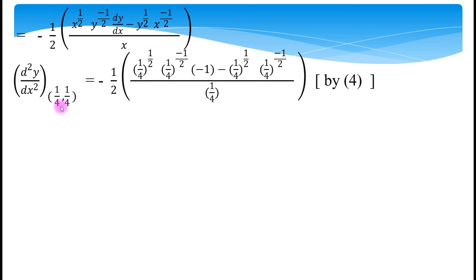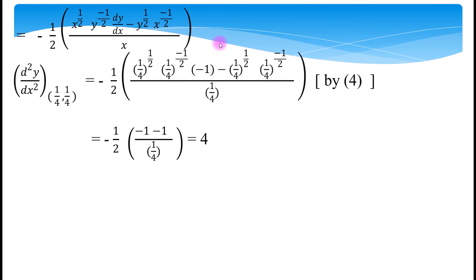Now find d²y/dx² at the point (1/4, 1/4). Substitute x = 1/4, y = 1/4, and dy/dx = -1 (from equation number 4) into the expression. In the numerator, (1/4)^(1/2)·(1/4)^(-1/2) cancels to 1, and similarly the second pair cancels. We get -(1/2)·[(-1) - 1] / (1/4) = -(1/2)·(-2)·4 = 4. Therefore d²y/dx² at (1/4, 1/4) equals 4.